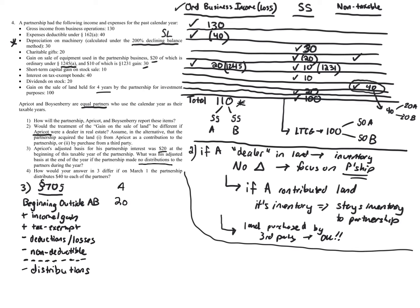Beginning outside basis for A is $20. For basis purposes, there is no discrimination between ordinary income, capital gain, Section 1231 gain, capital losses, or ordinary losses — it all nets together. So we can take all items the partnership reported, take A's 50% share, and net them as one number.